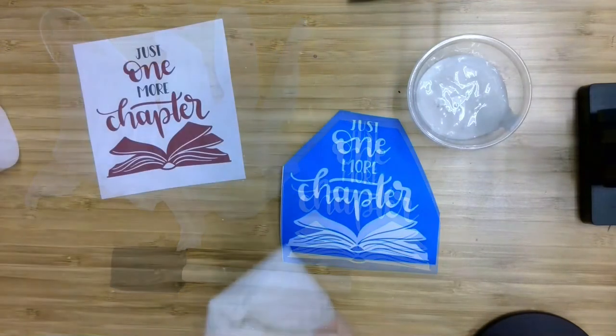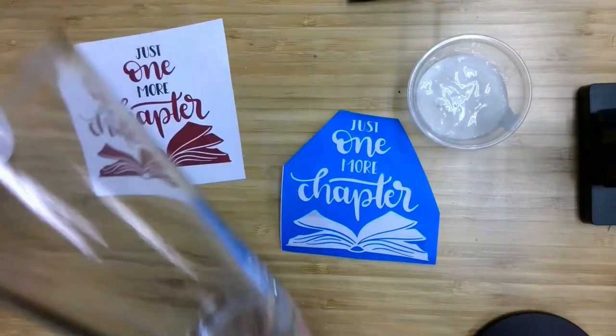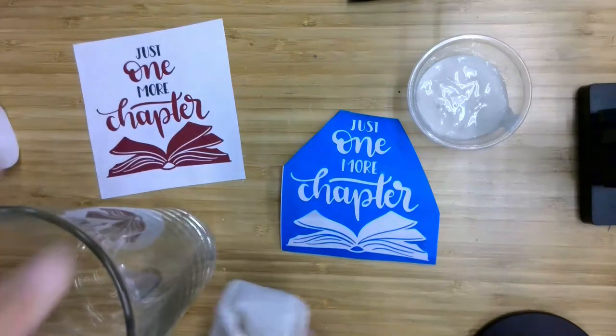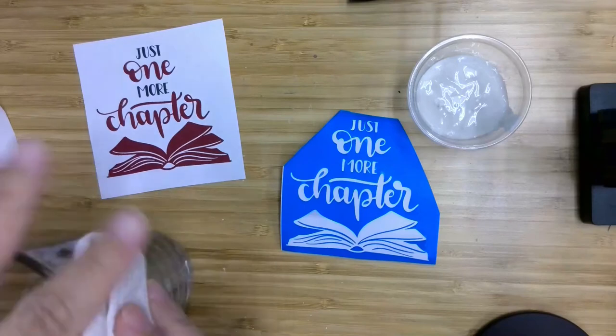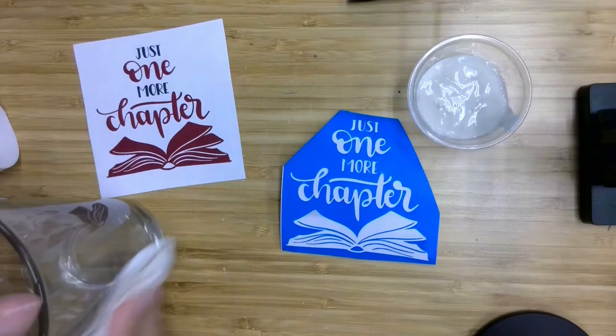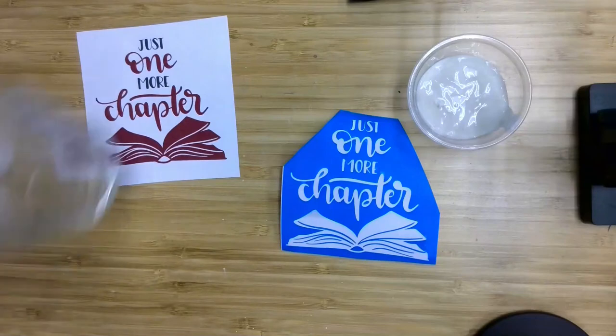So the first thing you want to do is make sure that your glass is clean. Remove any labels that you have, and then if you've got some alcohol, go ahead and clean off the outside and set it aside.